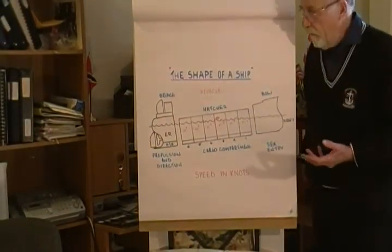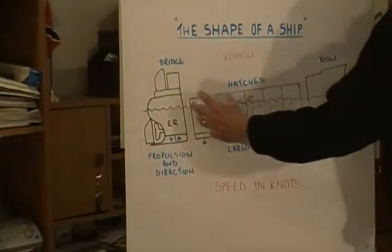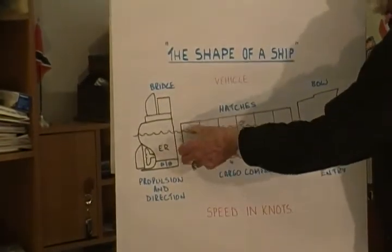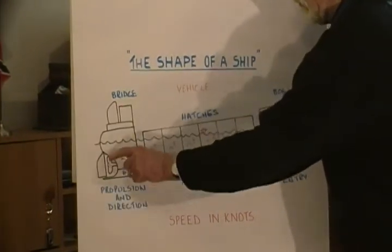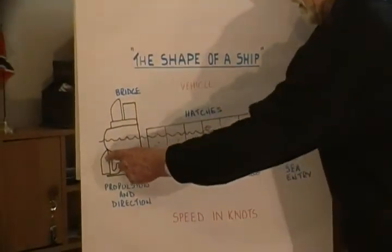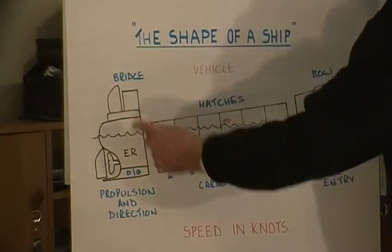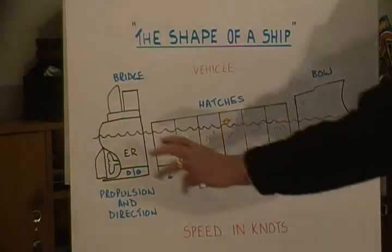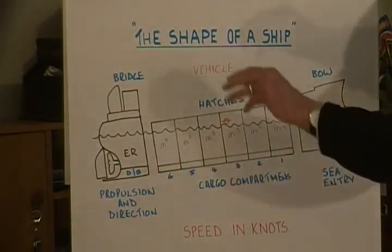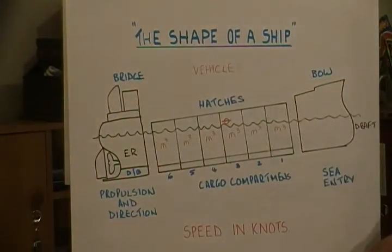We're going to have a quick look at the shape of a ship. This is a bulk carrier that I've drawn here in three sections: the bow entry section, the midships part which is your cargo compartments, and the stern which provides the propulsion and direction. Propulsion and direction is dictated by the propeller through the engine room and the bridge. The propeller and rudder are deeper in the water — she's trimmed by the stern — because that is how she goes through the water a lot easier.